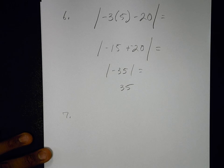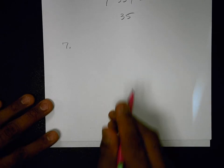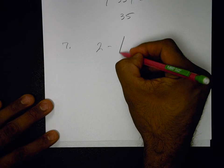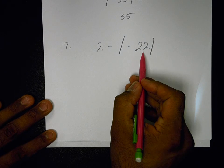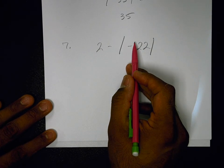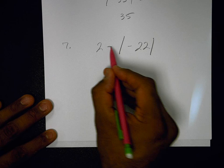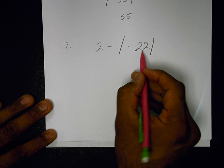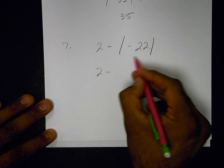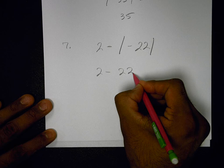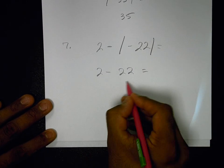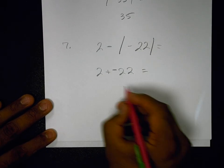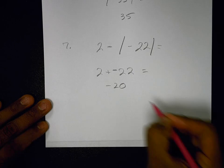Last example here. 2 minus the absolute value of negative 22. Do everything inside of here. There's nothing to simplify. So how far is negative 22 from 0? It's 22 spaces. Then I subtract here. And I get negative 20.